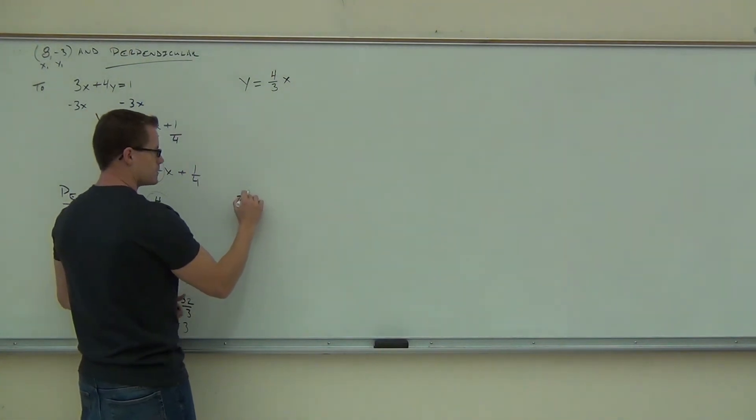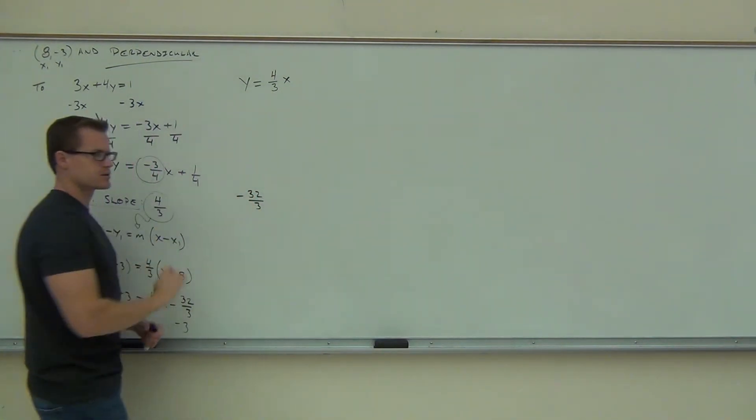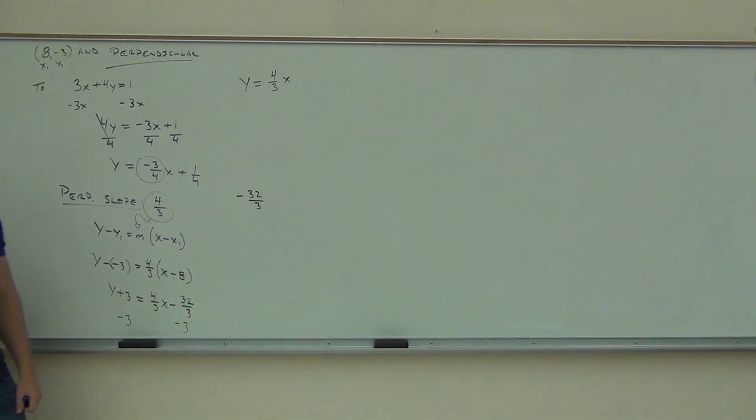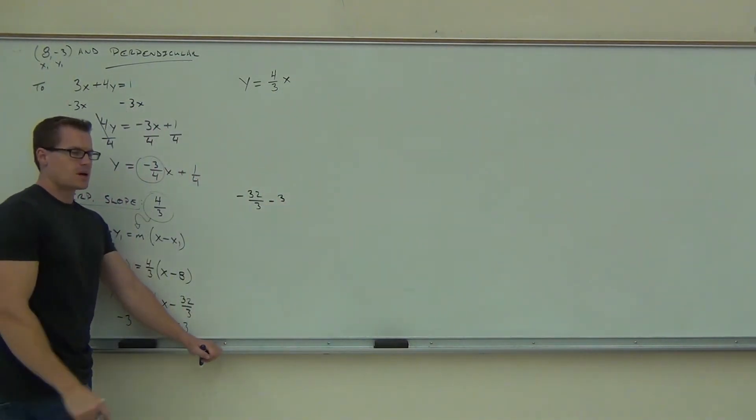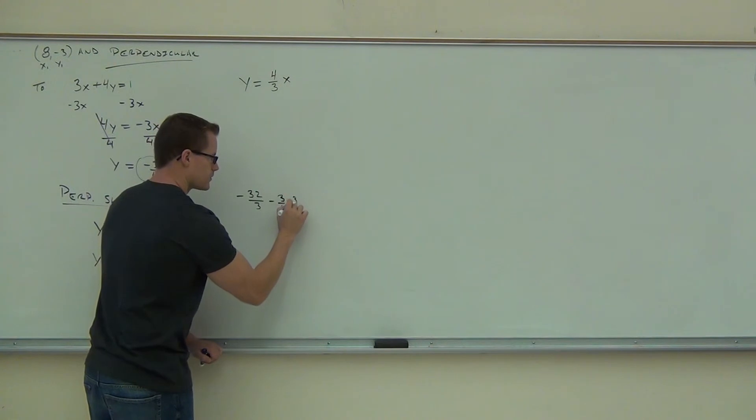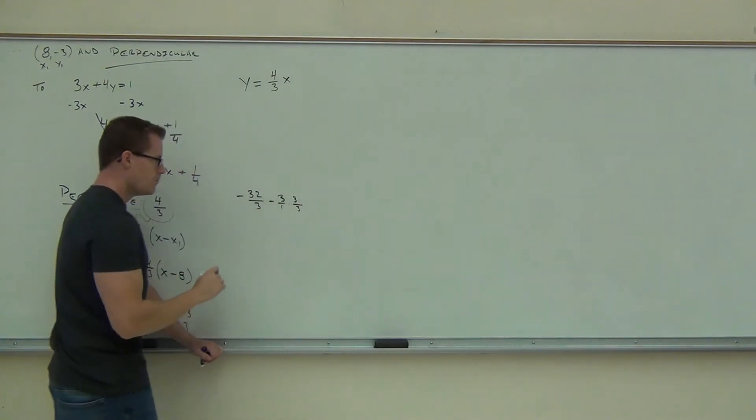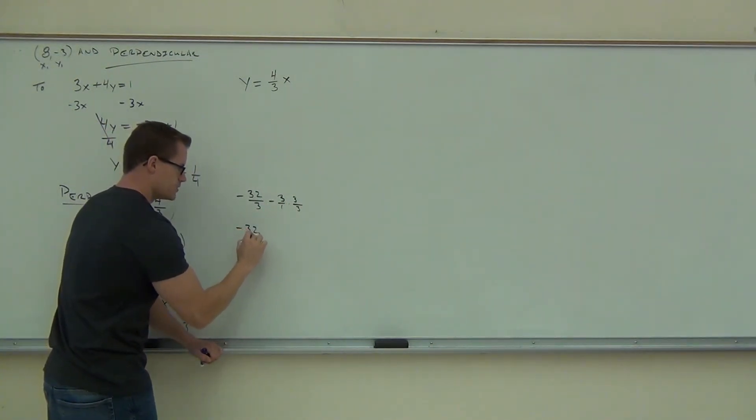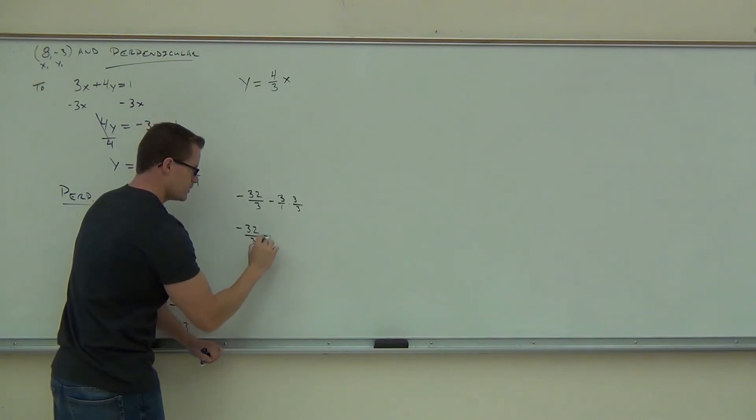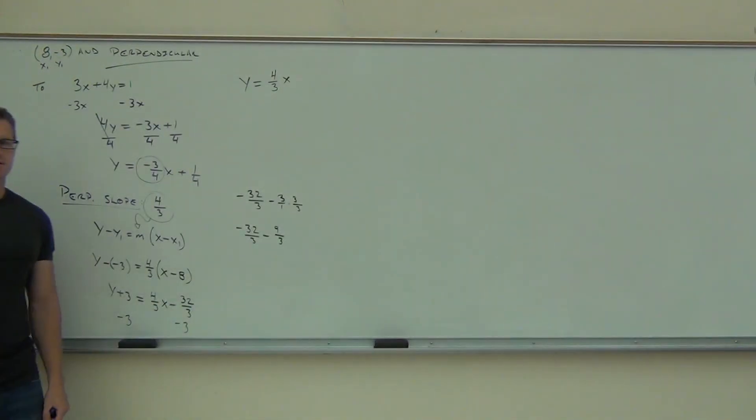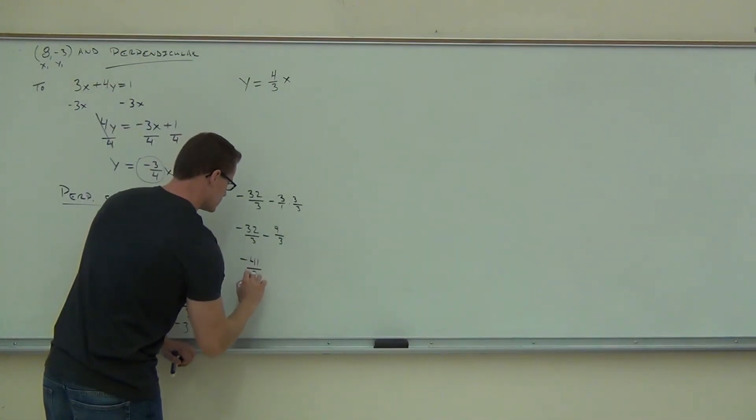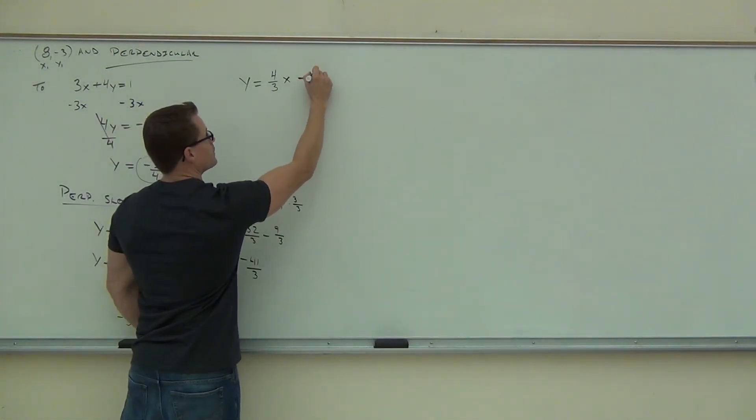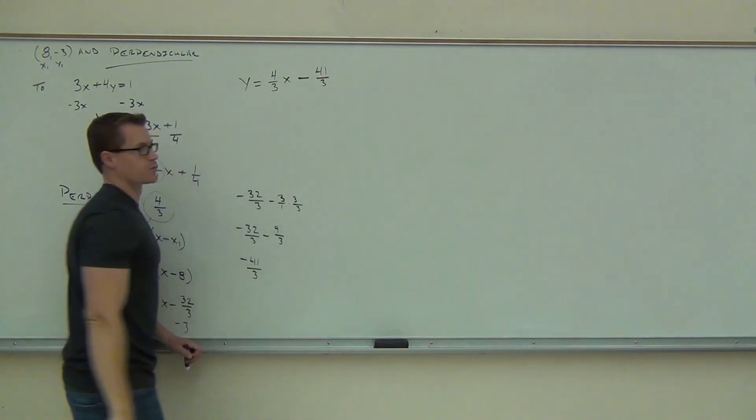But then here we have minus thirty-two-thirds minus three. So do that off to the side if you'd like. You just have to take the sign with it so the minus will treat that like a negative. Negative minus three, common denominator of three, negative thirty-two-thirds minus nine-thirds. That's going to give you negative forty-one-thirds.